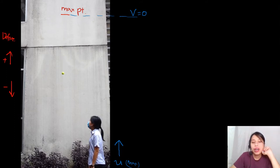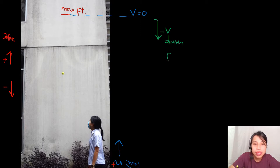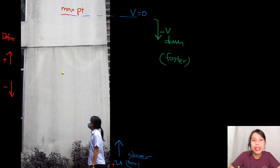Our definition: up is positive, so the initial velocity u is positive. The ball stops moving at maximum height, then comes down — that velocity is now negative because it's going downward. Going up it's getting slower and slower; coming down it's getting faster and faster.